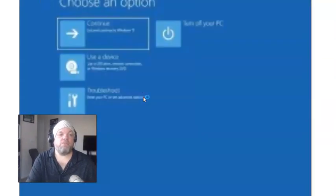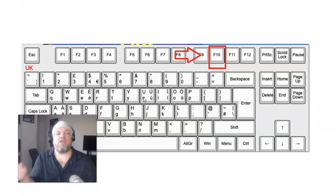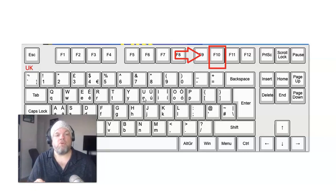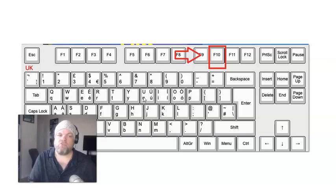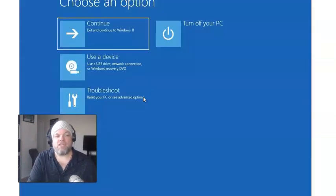Now here's the method for when the computer is completely shut down. When you restart the computer from a full shutdown, hit F10 several times repeatedly when you see the little Sony logo — F10, F10, F10, over and over again. That should take you to that recovery screen I showed you a little bit earlier.